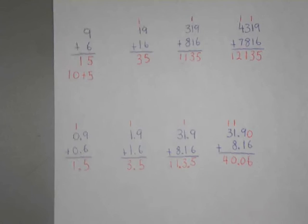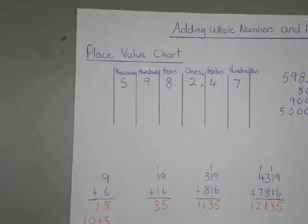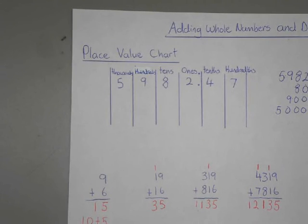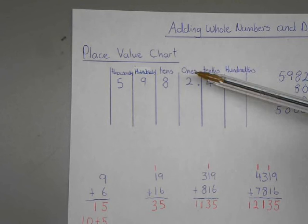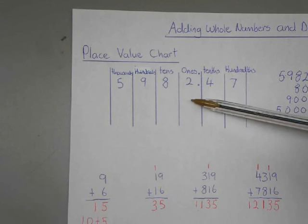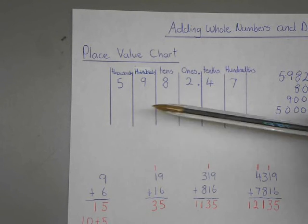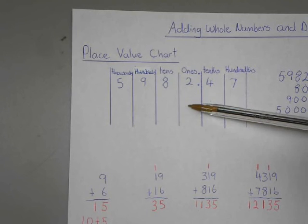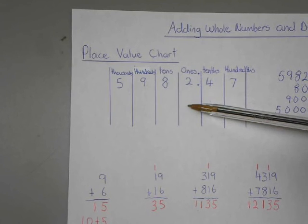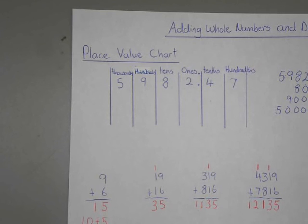The concepts of adding don't really change even when decimals are involved. The key is always aligning your place values — every number needs to be in its proper section. You cannot have the 1s in the 100s column or the 10s in the 1s column. Everything must be aligned, and if you do so, you will have correct answers.